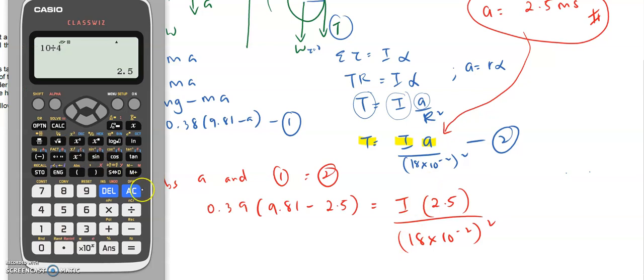So I just do it: 0.39 times 9.81 minus 2.5 equals I. We want to find 2.5 divided by 18 times 10^-2 squared. This is the best part. Click calculator. 0.39 times 9.81 minus 2.5.